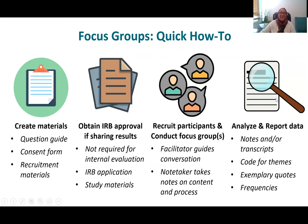Here's a quick overview of the focus group process. First, you create your materials. You develop a question guide, which we'll get to in the next section. You come up with a consent form and share that with participants to make sure that they agree to participate. Then you develop recruitment materials to get participants to participate in the focus group. These can include flyers, email messages, ads to share on social media, and so on.